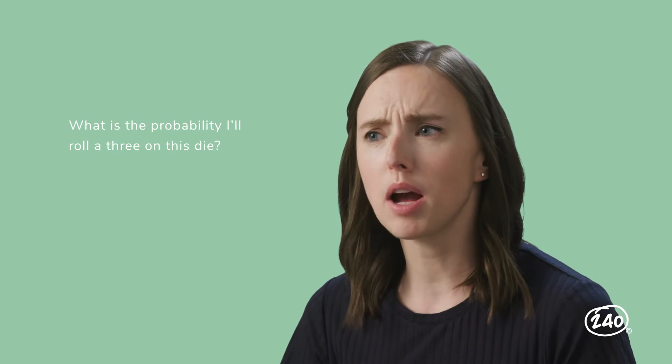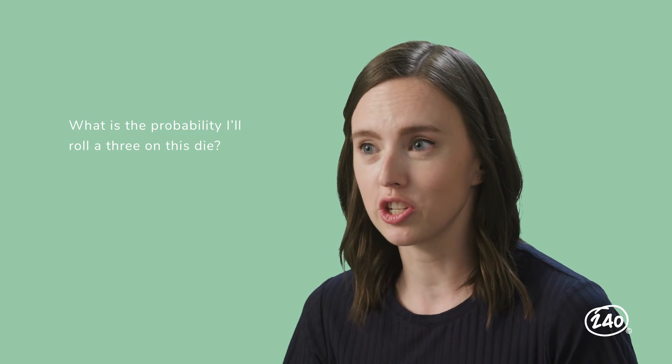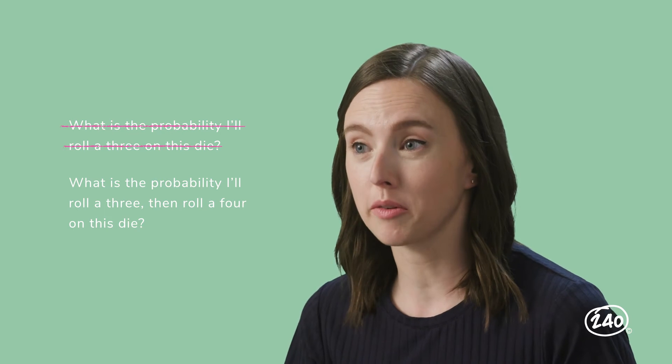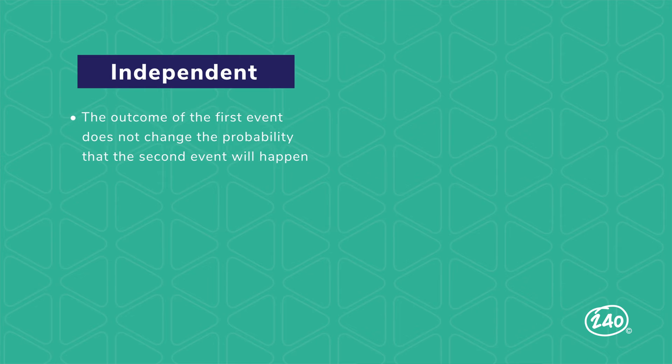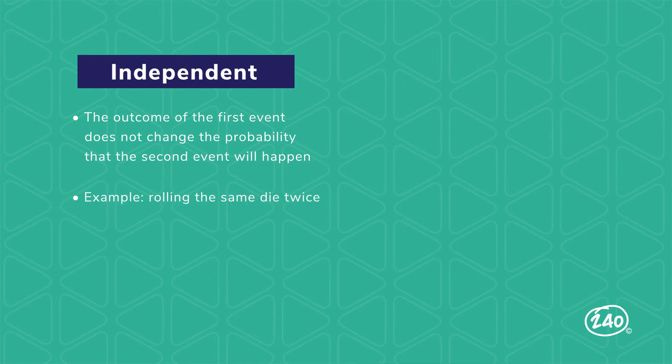Instead of asking, what is the probability I'll roll a 3 on this die, you take it up a notch. What is the probability I'll roll a 3, then roll a 4 on this die? These compound probability problems can either be independent or dependent. If the compound probability is independent, the outcome of the first event doesn't change the probability that the second event will occur. So when I roll a die once, no matter what the outcome, I still have the same chance of rolling any of the six numbers when I roll it a second time. To calculate the probability of an independent compound event, multiply the probability of event A times the probability of event B. So the probability of rolling a 3 followed by a 4 is 1 in 36.